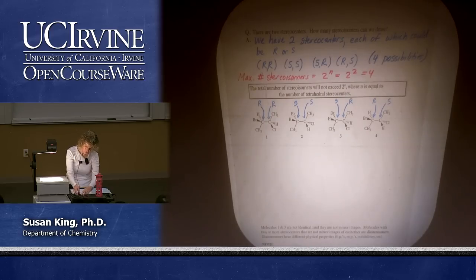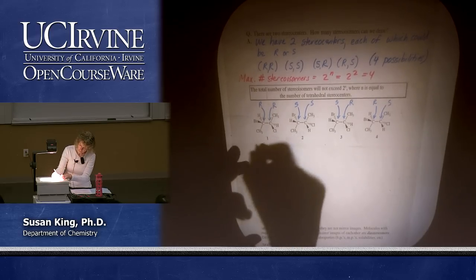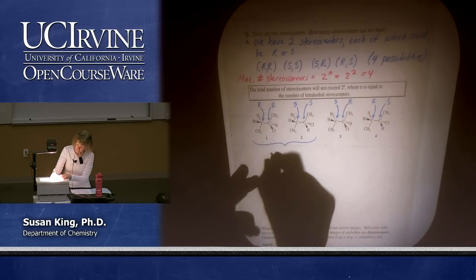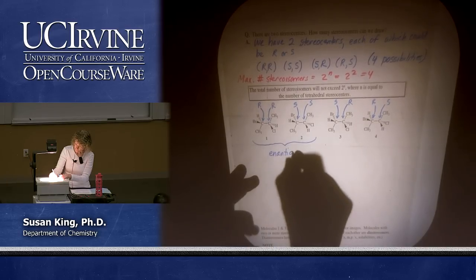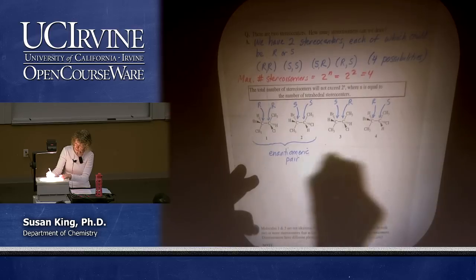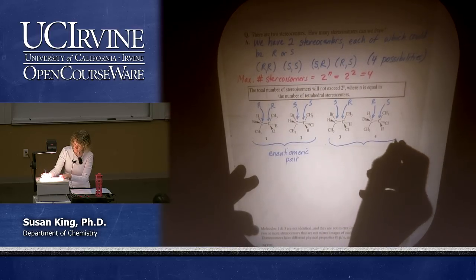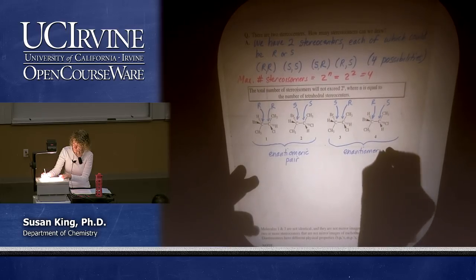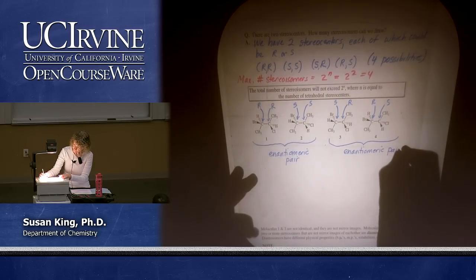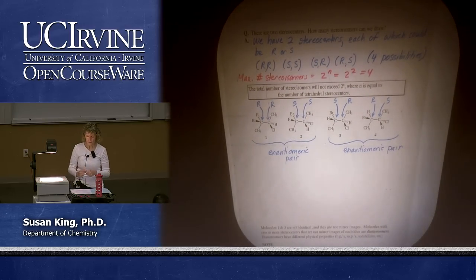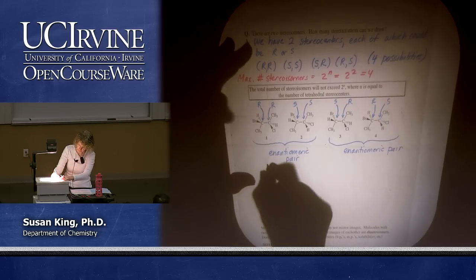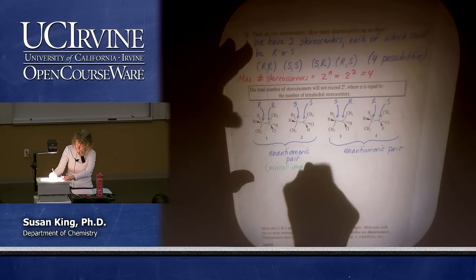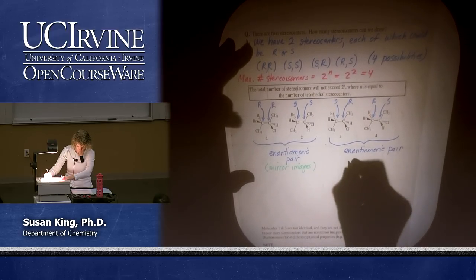It turns out that these first two are an enantiomeric pair. And the second two are also an enantiomeric pair. Although they're not drawn this way, these are actually mirror images of each other — 1 and 2 are mirror images, and 3 and 4 are also mirror images.